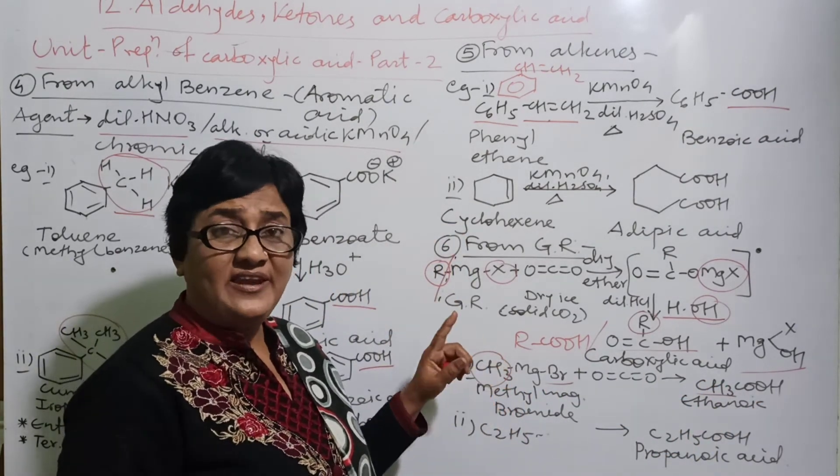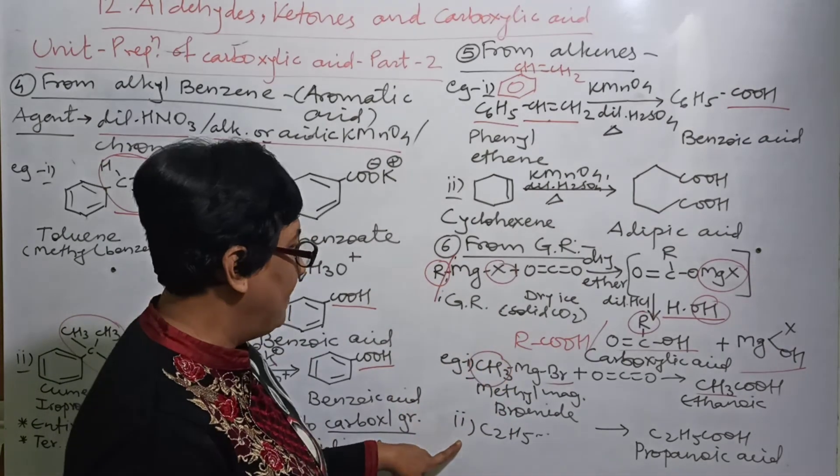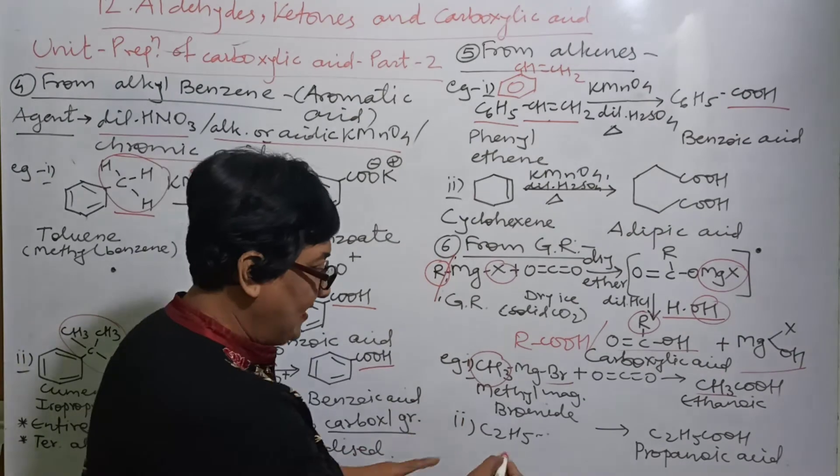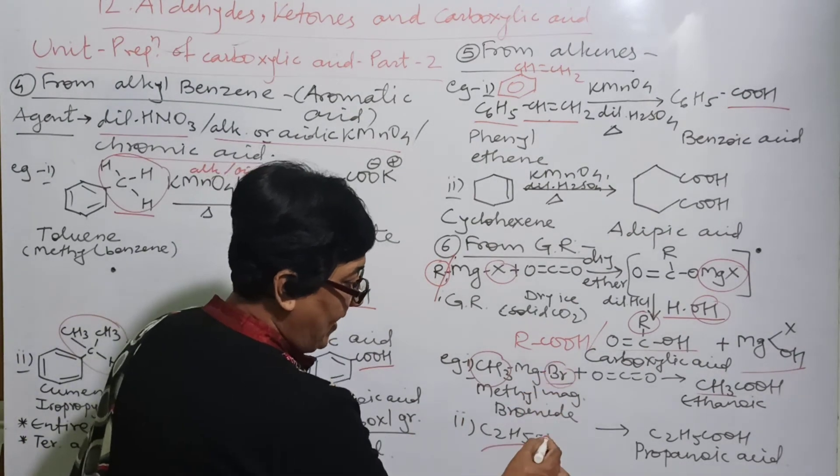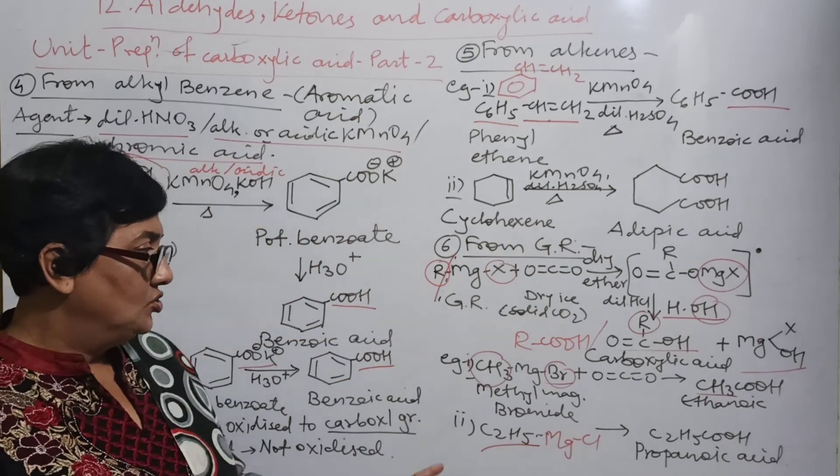So here R is replaced by CH3, here R replaced by CH3, and CH3-COOH means ethanoic acid. In simple, the reaction and product are given by me. And now you are very much familiar with such type of reaction. Second example: replace this R by C2H5 and this Br by Cl and write down the reaction.